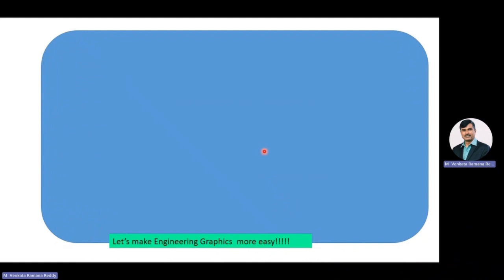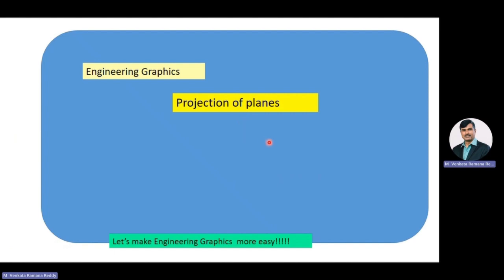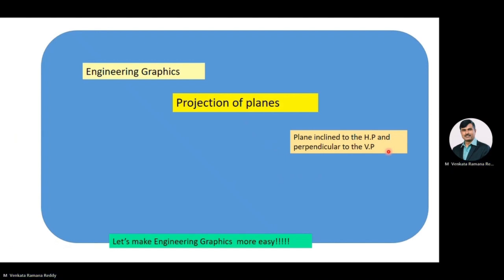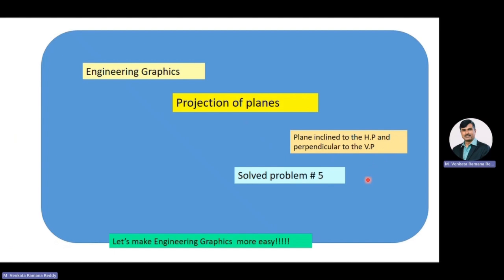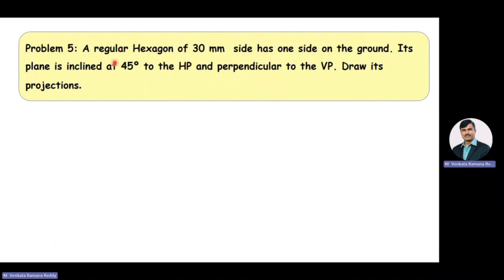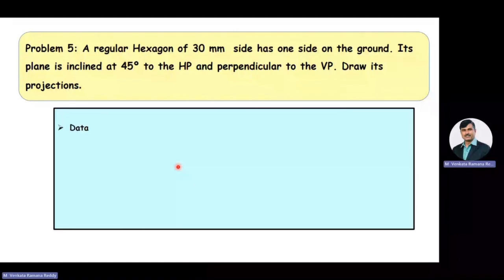Hello everyone. We are into the discussion on the subject Engineering Graphics. Under Engineering Graphics, we are discussing a topic called Projection of Planes. We are going to solve a problem on projection of a plane inclined to the HP and perpendicular to the VP. This is the fifth solved problem. The given problem is: a regular hexagon of 30 mm side has one side on the ground, its plane is inclined at 45 degrees to the HP and perpendicular to the VP. Draw its projections.